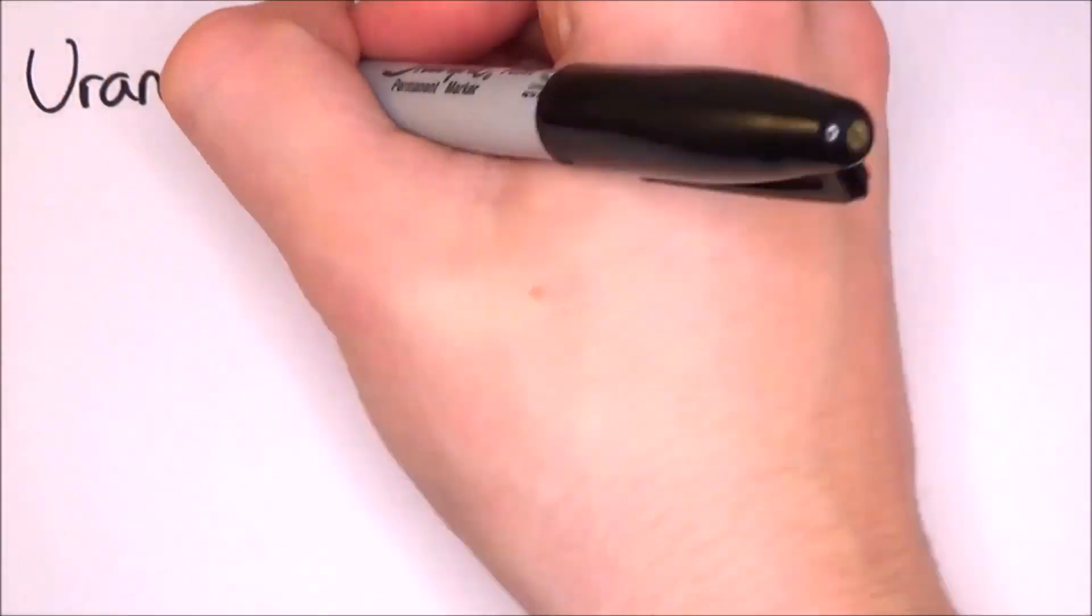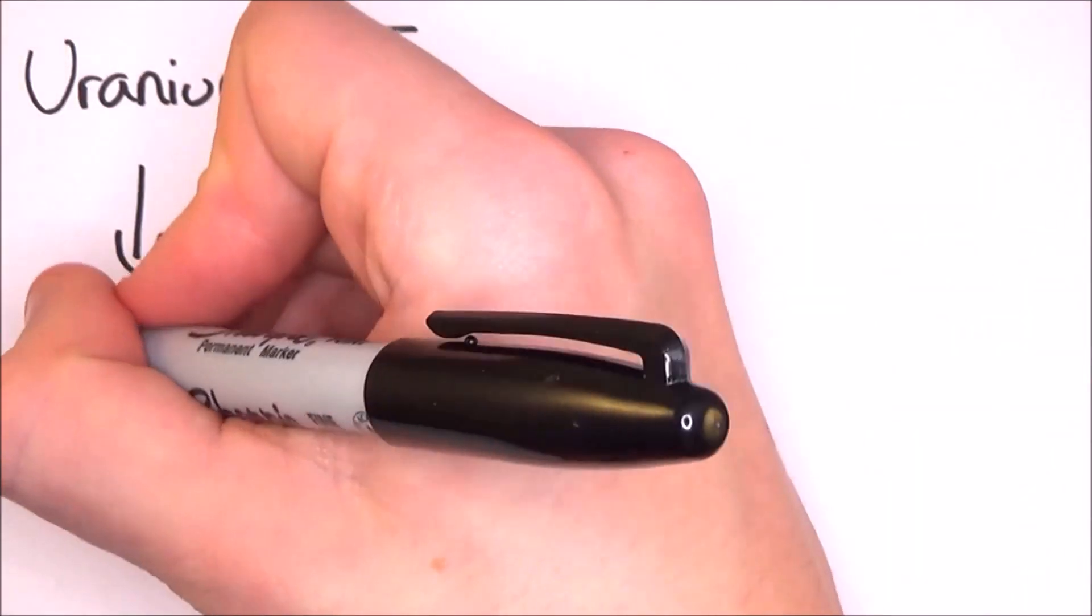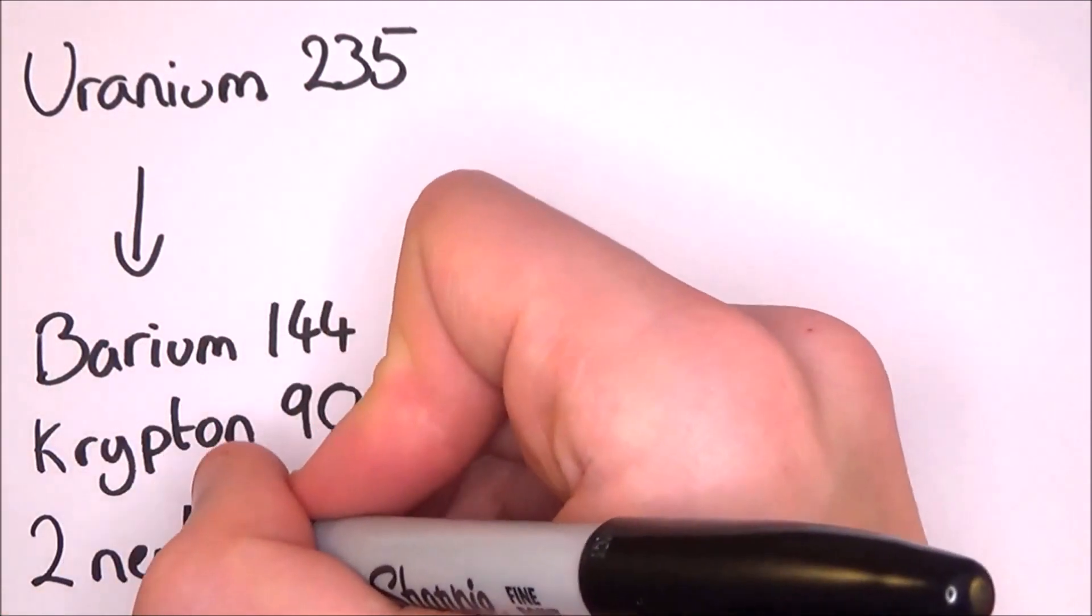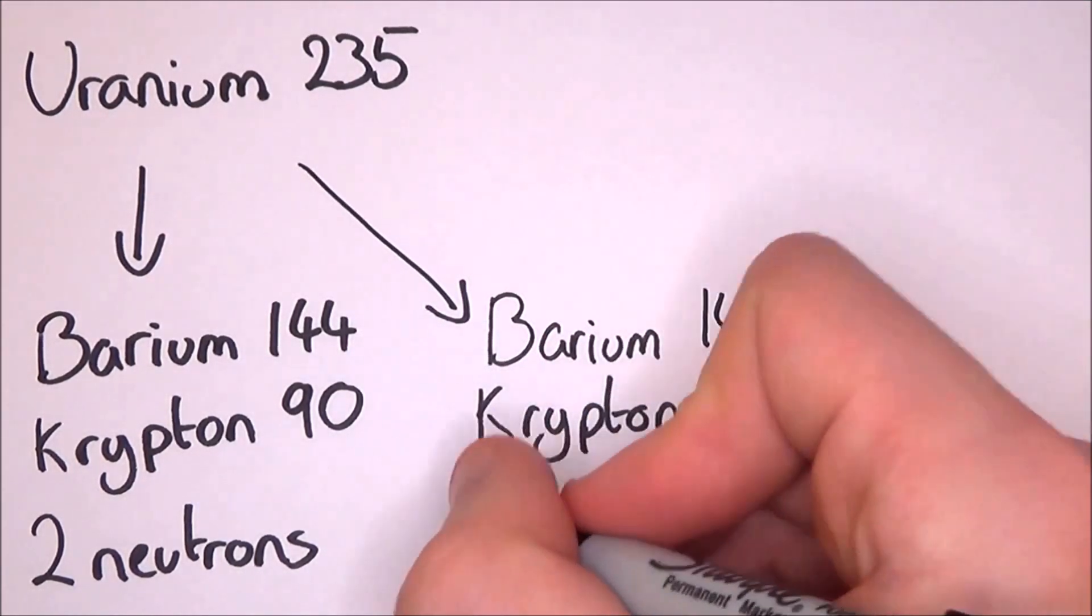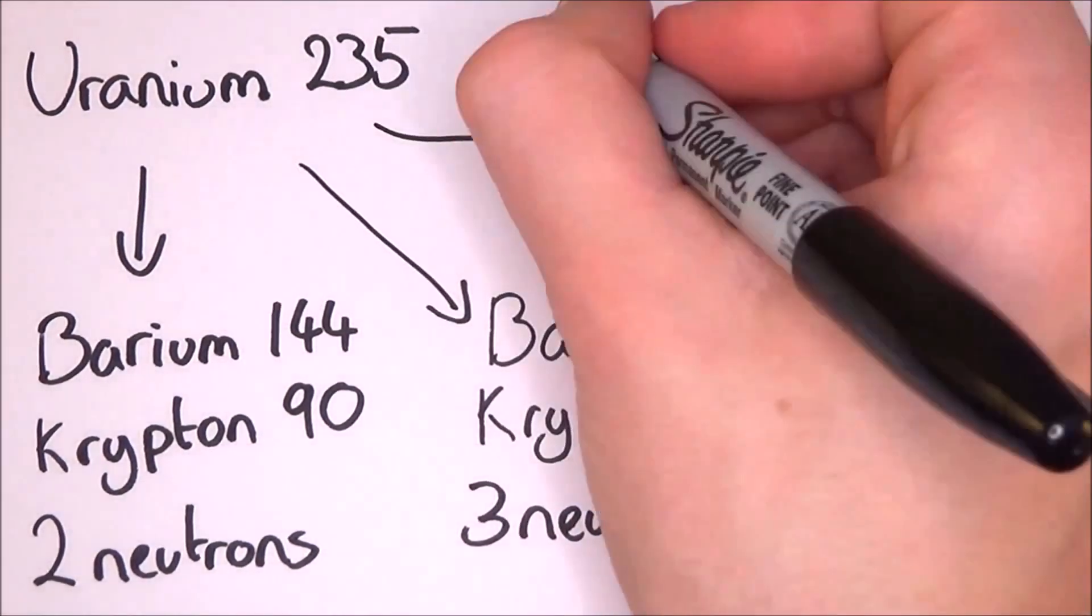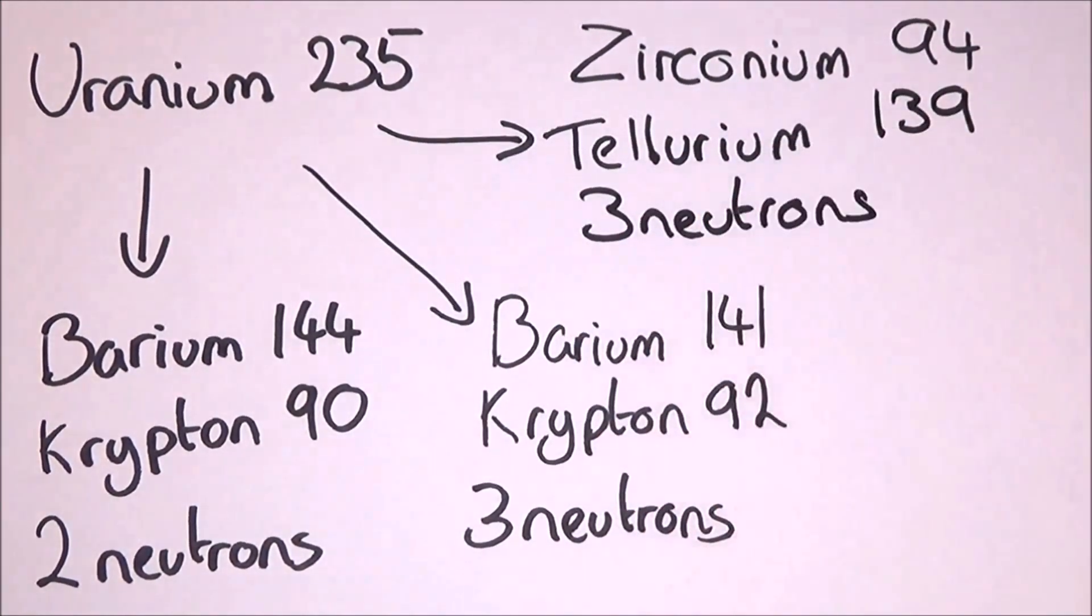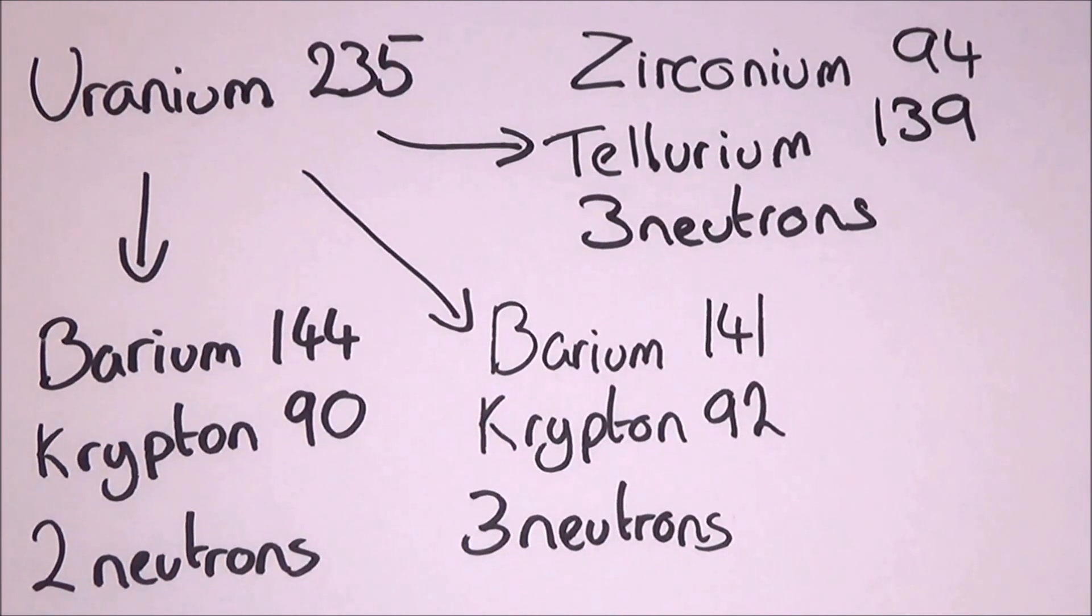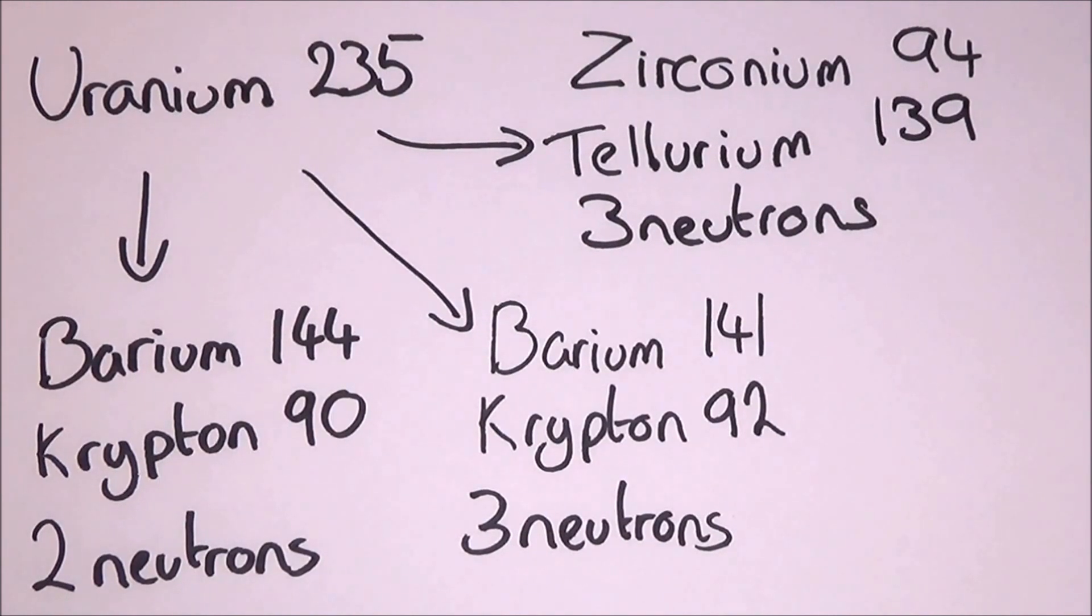In reactors, uranium-235 can turn into several different components. It can turn into barium-144 and krypton-90 plus 2 extra free neutrons. Or it can turn into barium-141 and krypton-92 plus 3 neutrons. But this outputs less energy, only about 190 million electron volts. Or it can turn into zirconium-94 and tellurium-139 plus 3 neutrons. This outputs more energy than the second one, but is less than the first at about 197 million electron volts.